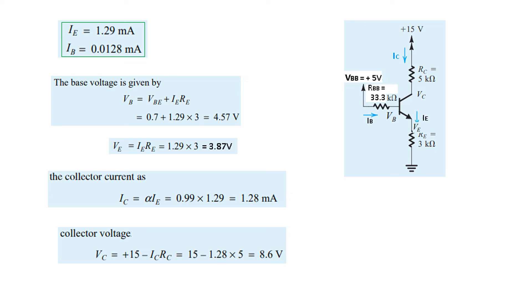To find Vc, we need Ic first. We know Ic = α*Ie, and α = β/(β+1) = 100/101 = 0.99. So Ic = 0.99×1.29 = 1.28 milliamperes. Now that we have Ic, the only thing left is Vc. Vc = 15 - Ic*Rc = 15 - 1.28×5 = 8.6 volts. Now we have found all three voltages and all three currents in the circuit.